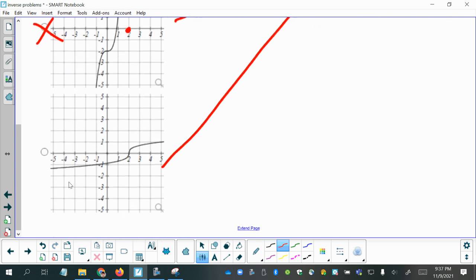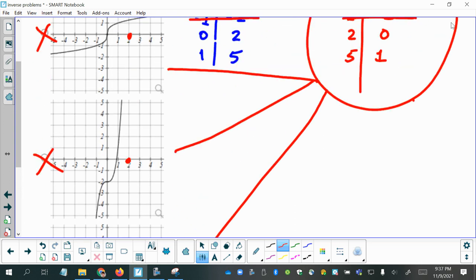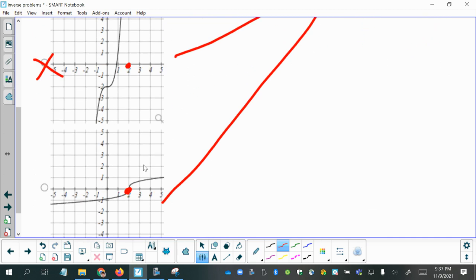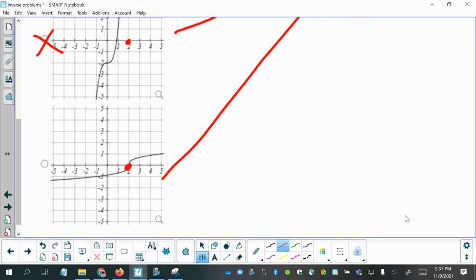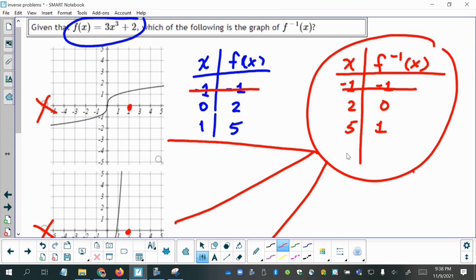The third option, 2 comma 0 is there. Okay, good. So this one is the only one that has 2 comma 0 on it. So it's probably the answer, unless we made a mistake somewhere.